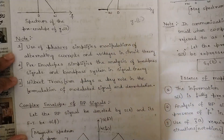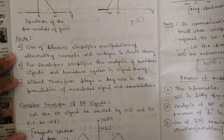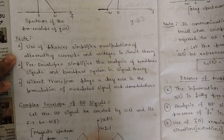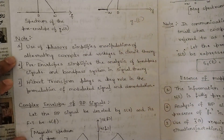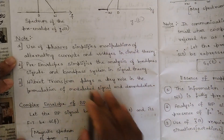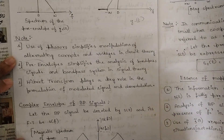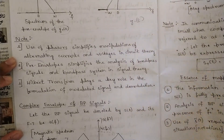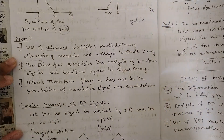Pre-envelope simplifies the analysis of bandpass signals because in bandpass signals we are considering both positive and negative frequencies at the same time. In pre-envelopes it is not possible to consider both positive and negative frequencies simultaneously, so in order to eliminate one kind of frequencies these pre-envelopes are used. Hilbert transform plays a key role because in a modulated signal the amplitude will be shifting, and after obtaining the modulated signal, the inverse Hilbert transform is needed to bring it back to the demodulated form.